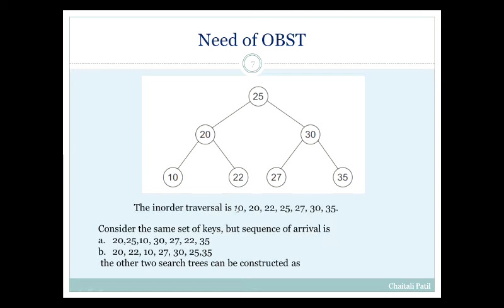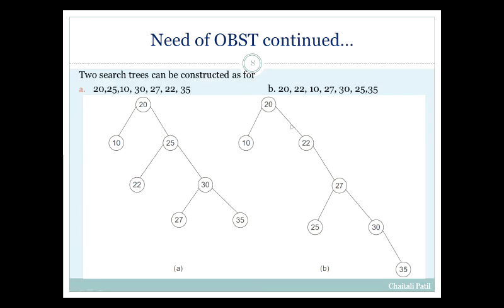Now consider the same set of keys but the sequence of arrival of keys is different. Consider two cases: case A and case B. The same keys — only the difference is in the arrival sequence of keys. Now construct the BST for these two cases. We got two different search trees for the same set of keys.